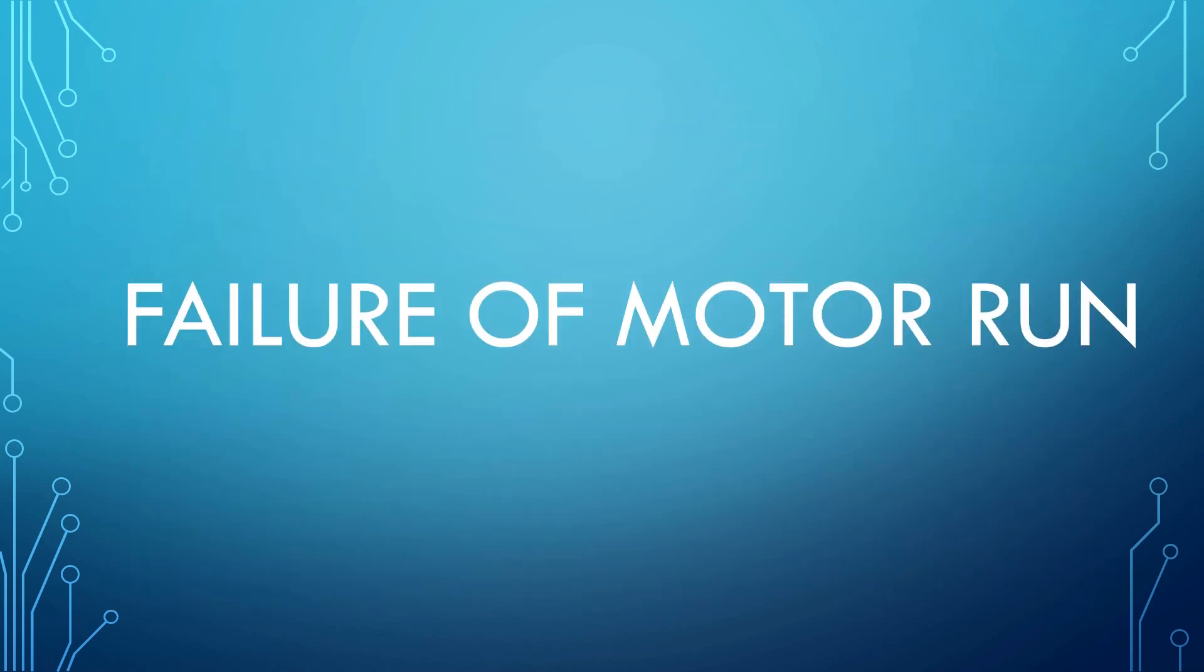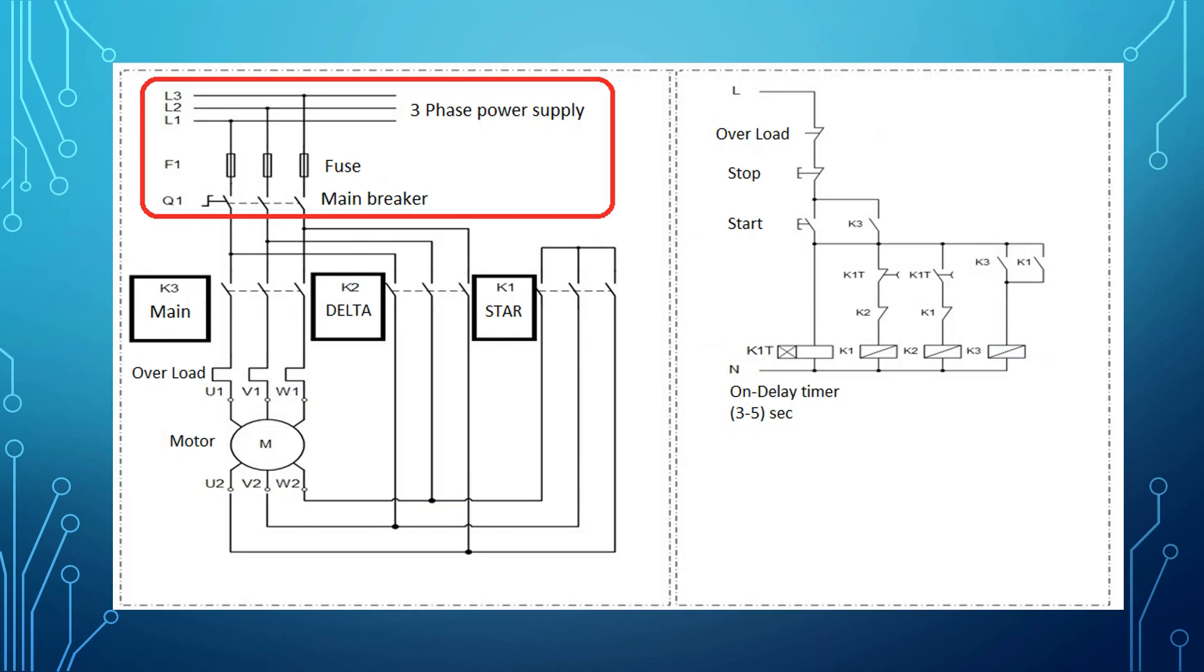Failure of Motor Run. If the motor is not able to run, then the first check is for the main power, the main fuses, and main breaker power by the multimeter.